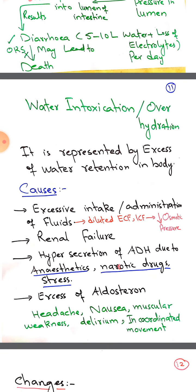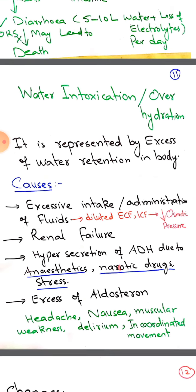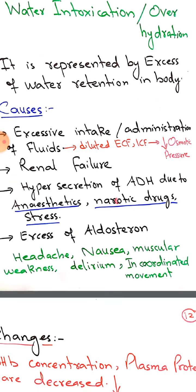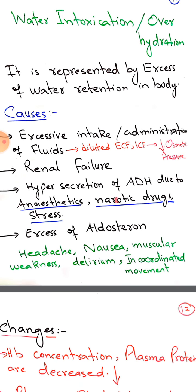The second abnormal metabolism of water is water intoxication or overhydration, also known as edema, represented by excess water retention in the body. Causes include excessive water intake and administration of diluted fluids, resulting in diluted ECF and ICF. This leads to decreased osmotic pressure due to less solute in those compartments.